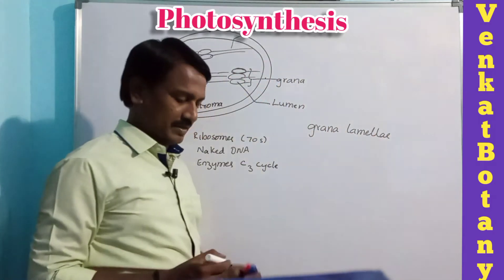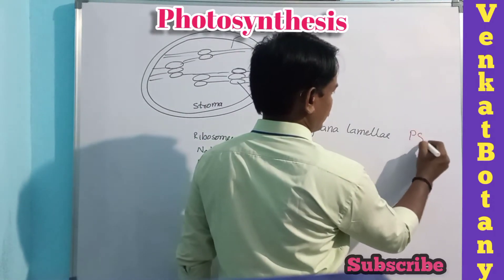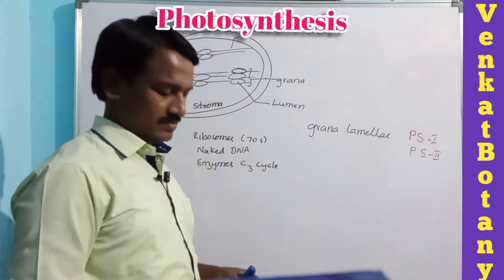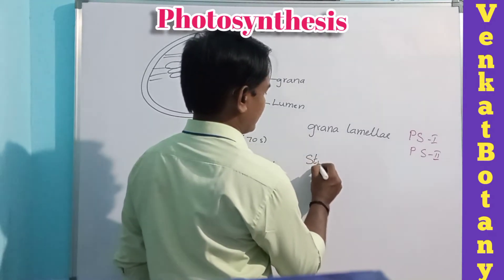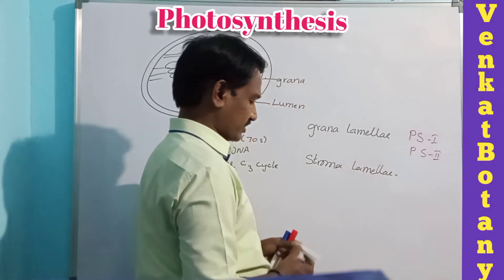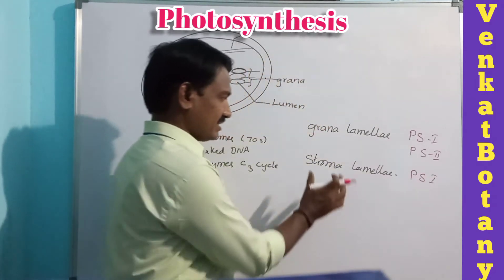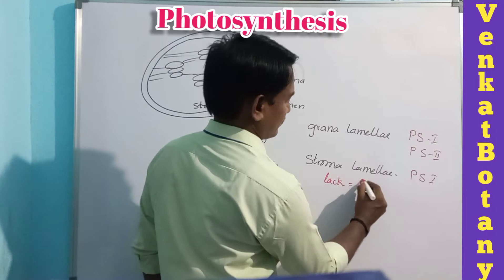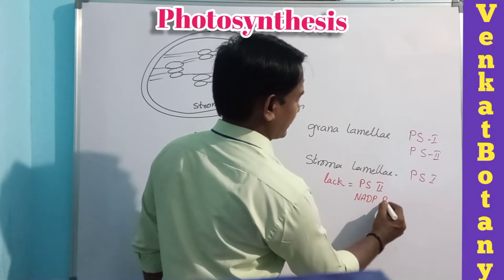Grana lamellae contain both Photosystem 1 and Photosystem 2. However, stroma lamellae contain only Photosystem 1 - meaning stroma lamellae lack Photosystem 2 and also lack the NADP reductase enzyme.